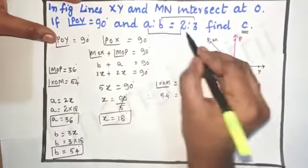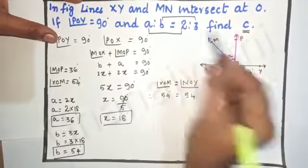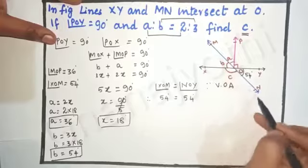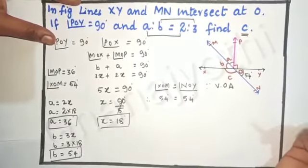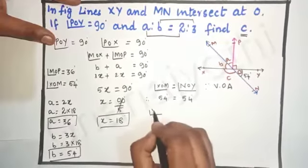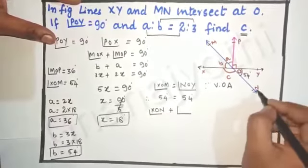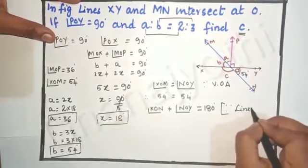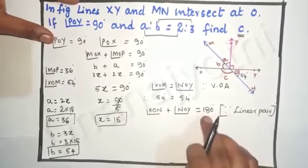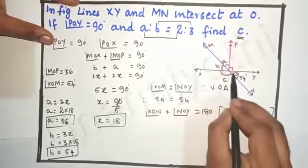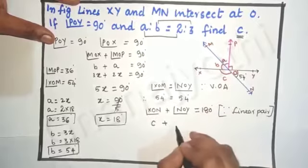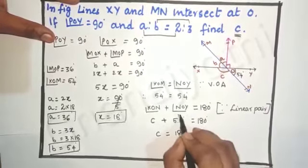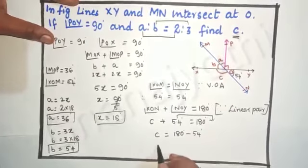We have found a equals 36 degrees and b equals 54 degrees. Now we want to find the value of c. Observing the figure, angle XON and angle NOY form a linear pair, so angle XON plus angle NOY equals 180 degrees. Angle XON equals c, and angle NOY equals 54 degrees, so c plus 54 equals 180 degrees.